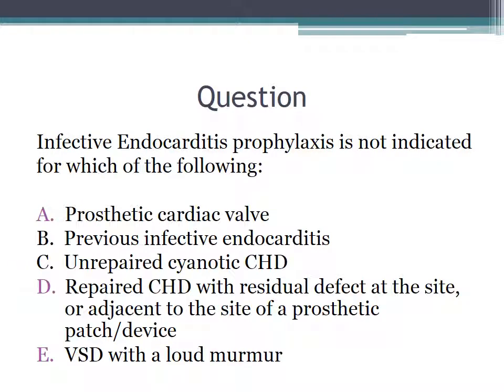It's very easy for the board to ask questions about endocarditis prophylaxis. Sample question: infective endocarditis prophylaxis is not indicated for which of the following? Choices are: prosthetic cardiac valves, previous infective endocarditis, unrepaired cyanotic congenital heart disease, repaired cyanotic congenital heart disease with a residual defect at the site or adjacent to the site of a prosthetic patch or device, or a VSD with a loud murmur.